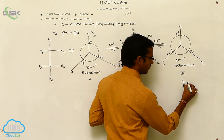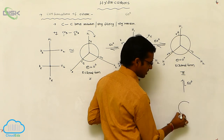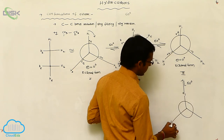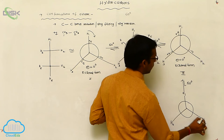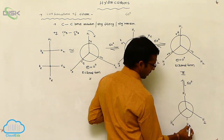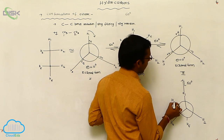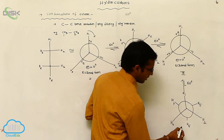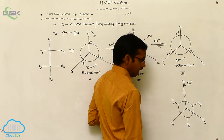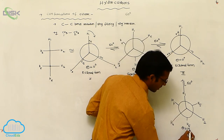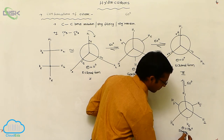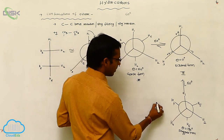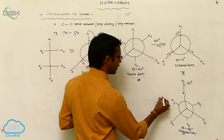This conformation structure undergoes another 60 degrees rotation with the front carbon constant — h3, h2. Here h6, h4, and h5 are the back carbon hydrogens. H1 and h6 are separated by a 180 degrees dihedral angle. This form is called the staggered form.